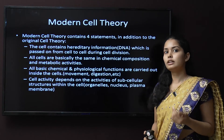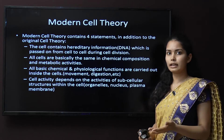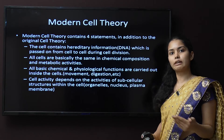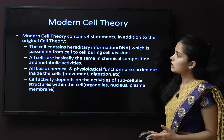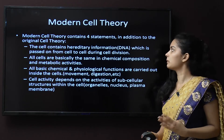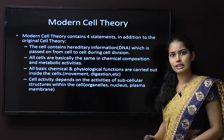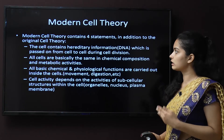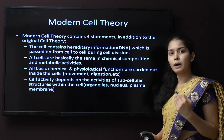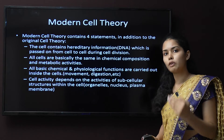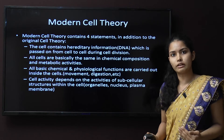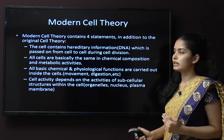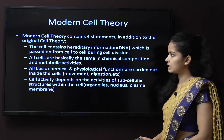Now the modern cell theory. The modern cell theory is mainly derived from the same cell theories described earlier, but contains four additional statements. The first statement: the cell contains hereditary information — DNA — which is passed on from one cell to another during cell division. That is, DNA, the genetic material, is passed from one cell to the other.